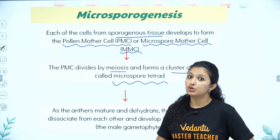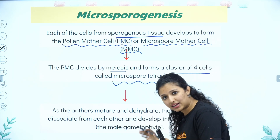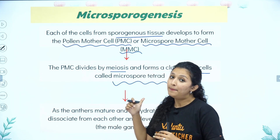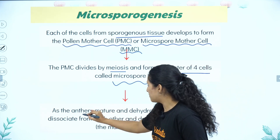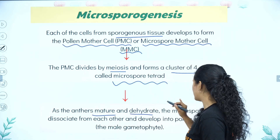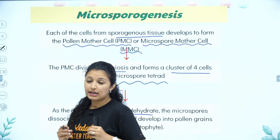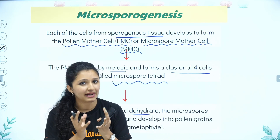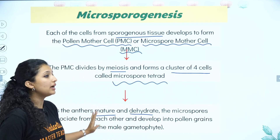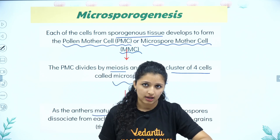I will have a handwritten slide for you. As the anther matures, the microspores dehydrate and dissociate. First they are all in a tetrad; then they separate and eventually form the male gametophyte. That is a brief overview of the process.